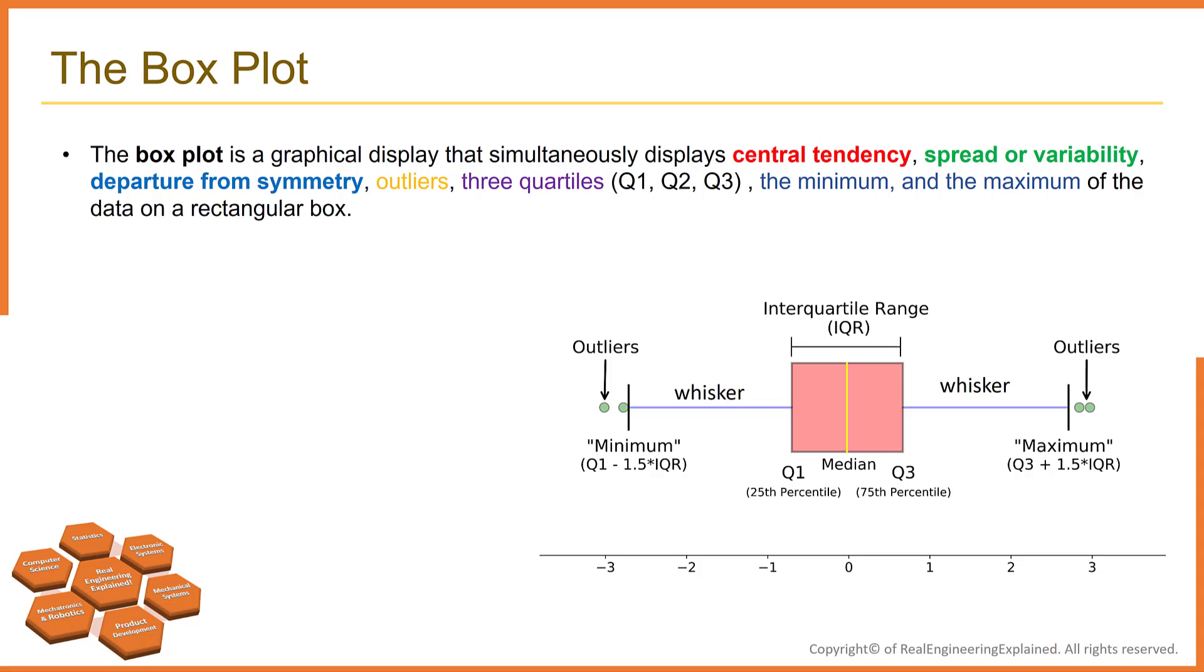The third topic which I would like to talk about is the box plot. The box plot is a graphical display that simultaneously displays several important features of data, such as location or central tendency of data, spread or variability, departure from symmetry, identification of observations that lie far from the majority of data. These observations are often called outliers. A box plot also displays the three quartiles of data, the minimum and the maximum of data on a rectangular box, which could be aligned either horizontally or vertically.